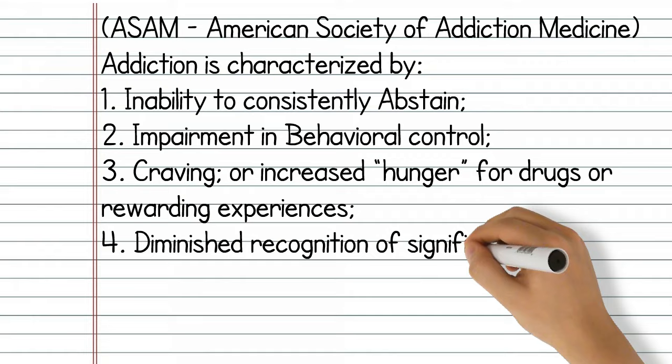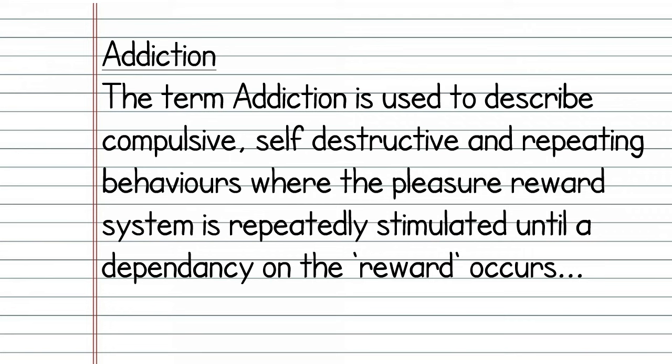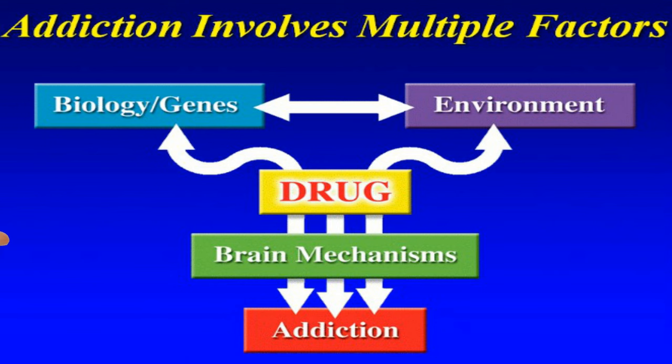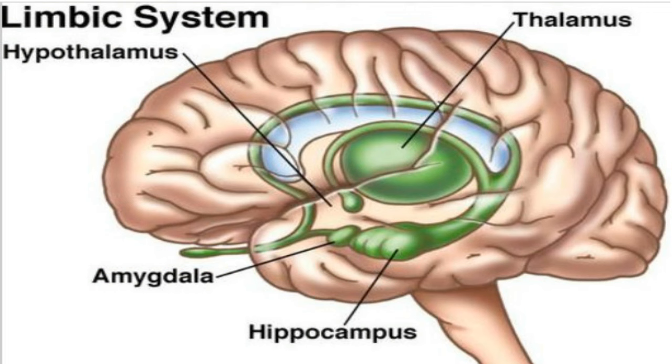Now let's look at types of addiction. Addiction is characterised by many factors that highlight the dysfunctional and destructive nature of addiction. The term addiction is used to describe compulsive, self-destructive behaviours where the pleasure reward system is repeatedly stimulated until a dependency on the reward occurs. Addiction is both behavioural and psychological, but there are two main distinctions: behavioural addiction and chemical addiction. Genetics account for about half the likelihood of developing an addiction, while environmental factors interact with a person's biology and affect the extent of genetic influence. The terms physical and psychological dependence are somewhat redundant as both types of dependence are mediated by neural mechanisms.